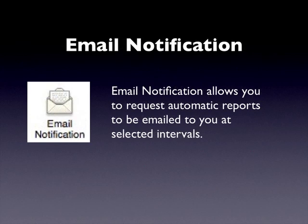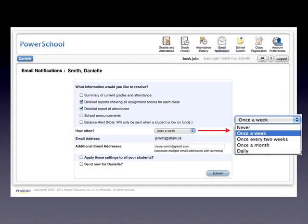The Email Notification icon is one of the most attractive features of the Parent Portal. Using it allows you to request automatic reports to be emailed to you at selected intervals. You can request an assortment of reports to be emailed on regular intervals — once a week, once every two weeks, once a month, or even daily. Those reports will be emailed to your registered email address, and you also have the option of directing those reports to other email addresses as well.